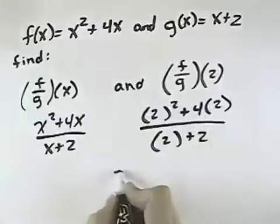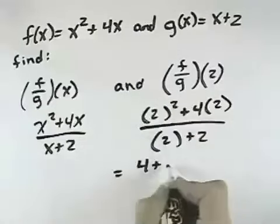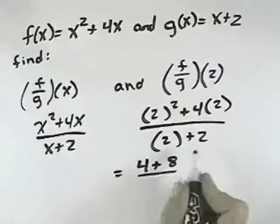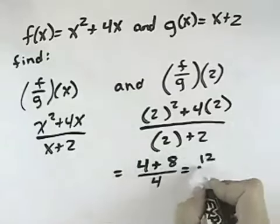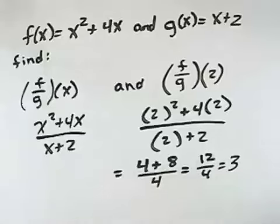So 2 squared is 4, plus 4 times 2 is 8, over the denominator, 2 plus 2, is 4. So 8 plus 4 is 12 over 4, or 3.